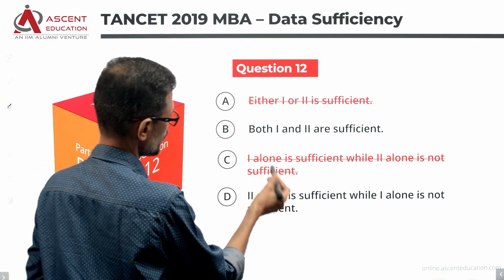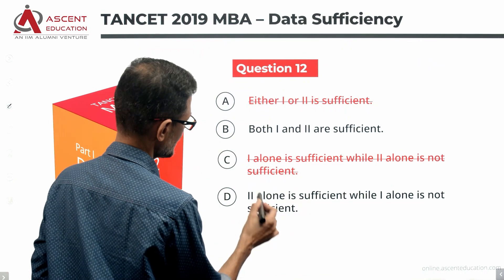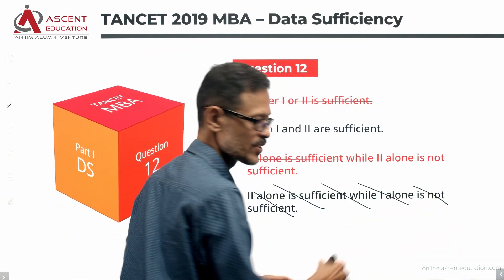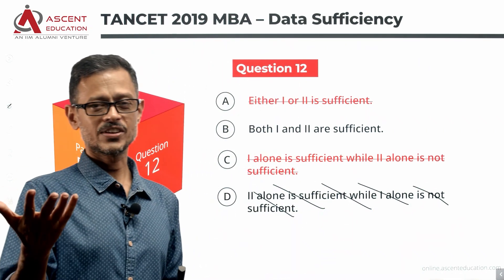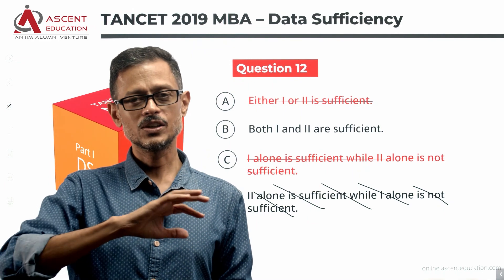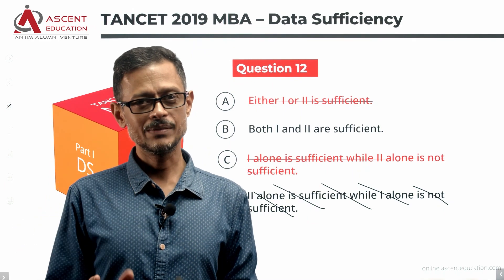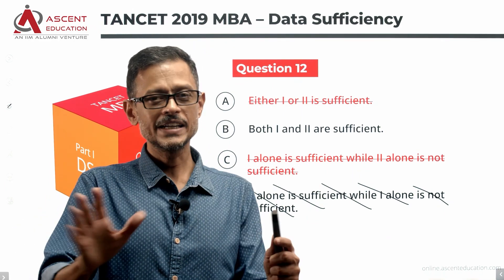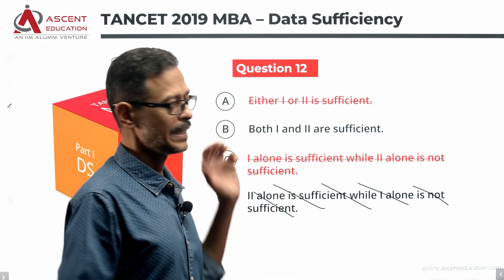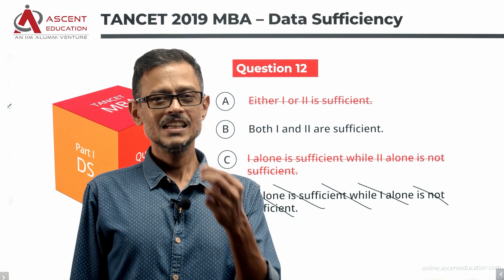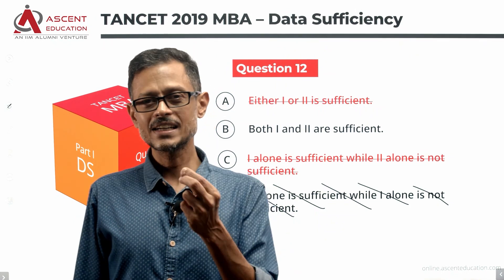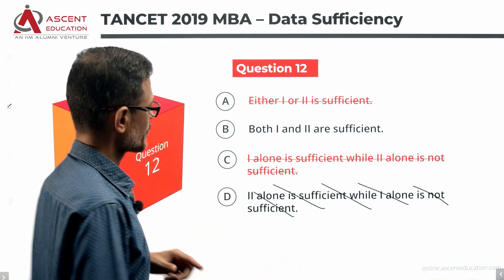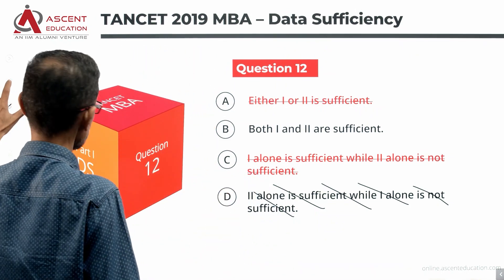Since statement two is not sufficient, we eliminate two more answer options. D can also be eliminated since it requires two alone to be sufficient. So we're left with answer option B. Now in learning mode, let's combine both statements and verify we get a unique answer.